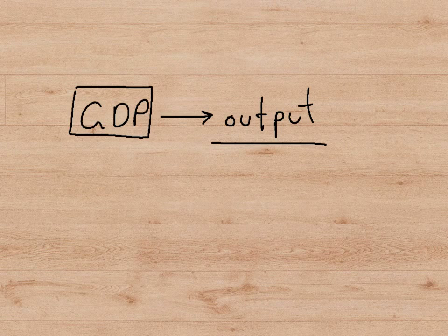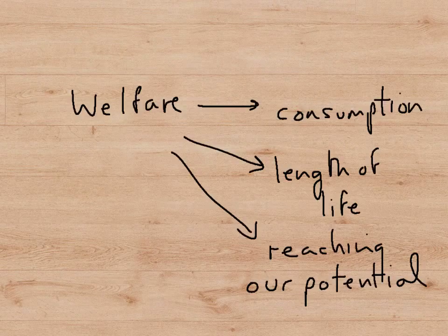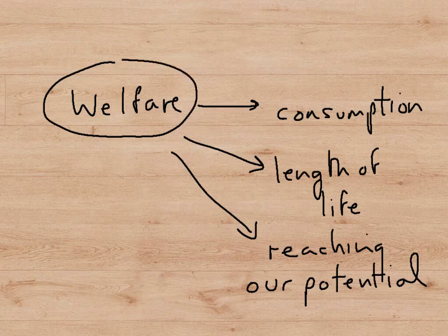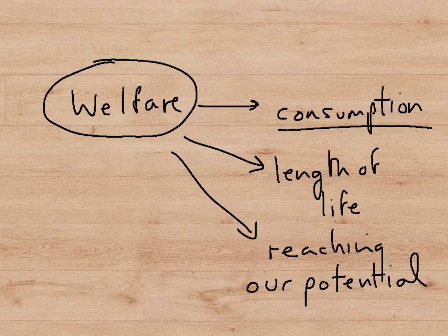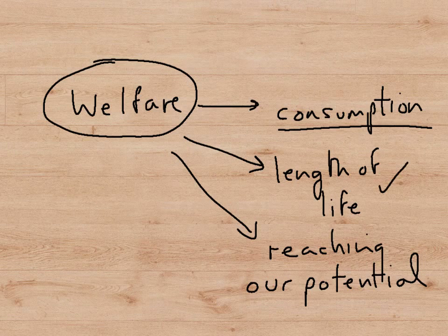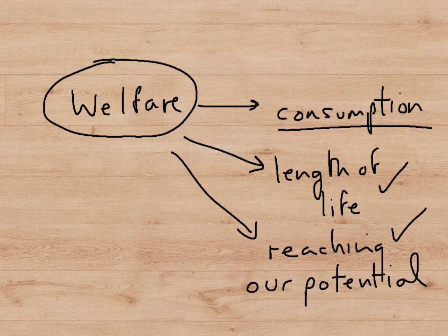So many economists have, over the years, tried to come up with something better than GDP as a measure of our welfare. They've broken down the word welfare into three things that they believe constitute welfare. Firstly, welfare or happiness has definitely something to do with consumption, because consumption of goods gives us utility or pleasure or happiness. But it also has something to do with how long we live, because the longer we live, the more we can enjoy the pleasure from consumption. And as human beings, we have a desire to reach our potential in life, to feel that we have achieved what we are capable of achieving, and so this should also be included in any measure of welfare.